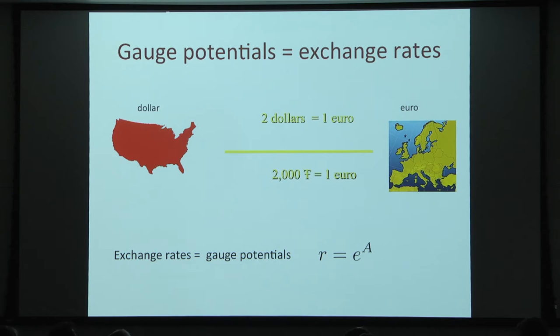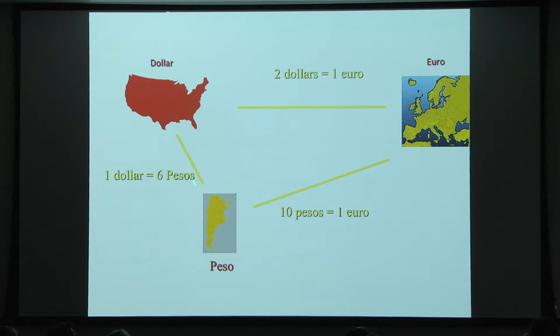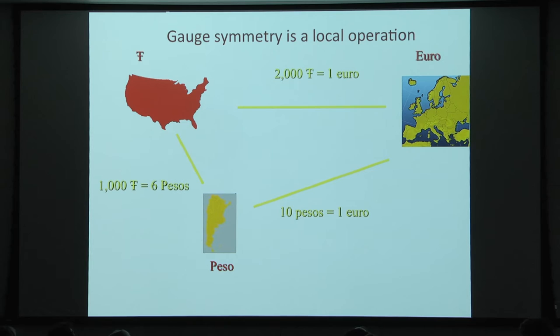We can have different countries with different currencies. If we change the gauge symmetry locally — as we know in physics — only these local exchange rates get changed, but not the other exchange rates. Now, do you see anything interesting about this set of exchange rates?